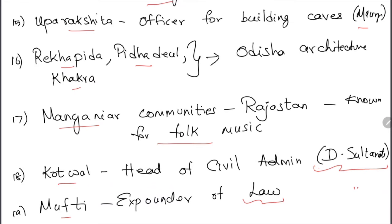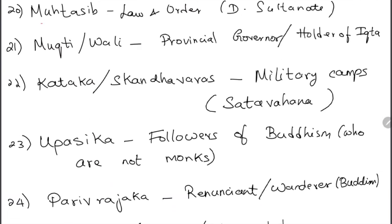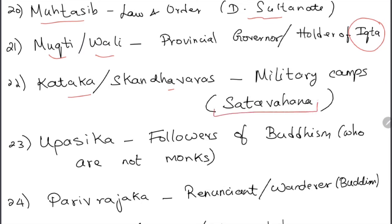Words like Mukti are generally related to court and law. 20 Muktas were law and order officers in the Delhi Sultanate. Mukti or Wali were provincial governors or holders of Iqta — the feudal land revenue system of the medieval period. Kataka or Skandavaras were military camps during the Satavahana period.